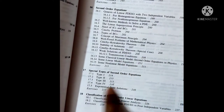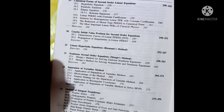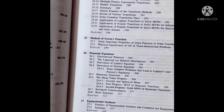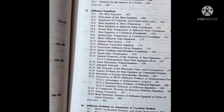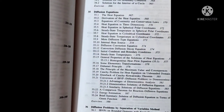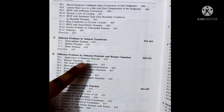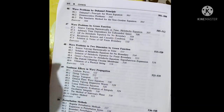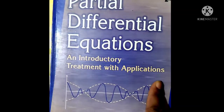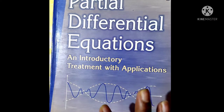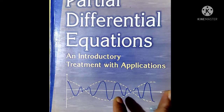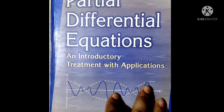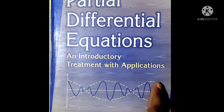Second order equations — classifications, hyperbolic equations, canonical form, Cauchy initial value problem, and Green's function method are all discussed. Diffusion equations, separation of variables, integral transforms, diffusion principle, Green's function method for diffusion, boundary value problems, wave equations — everything is discussed. This is a complete book for both undergraduate and postgraduate students, and for NET, SET, GATE, and JAM exam preparation.